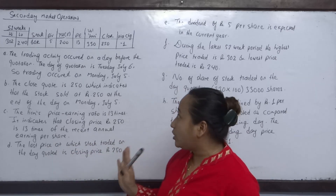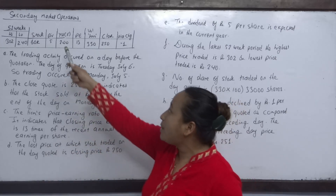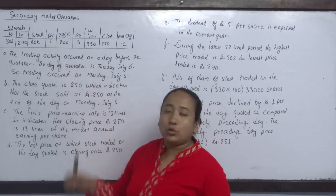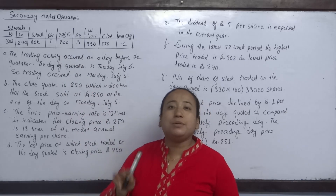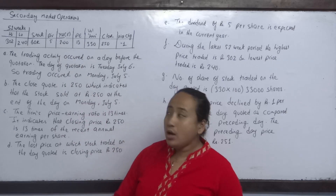Distribute 20,000. The dividend is 30,000.